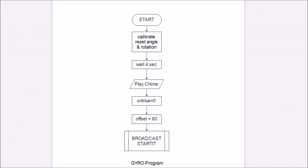The last thing we can look at is the gyro program. So here we start. We calibrate the angle and rotation of the gyro. And remember, it takes four seconds for the robot to calibrate, so you have to wait four seconds. Then it plays a chime to let you know that it's ready to go. It sets the on blue variable as zero, meaning that it's going to drive forward first if the detector actually detects blue.